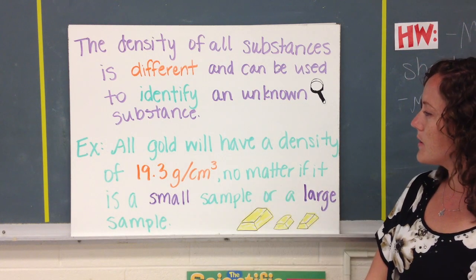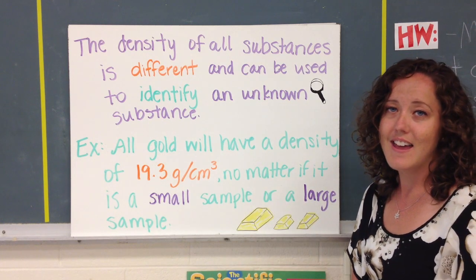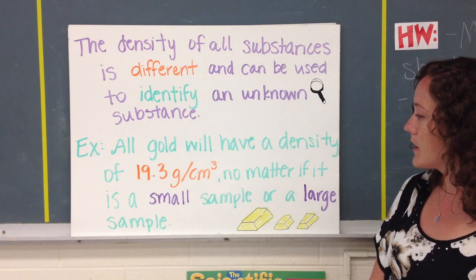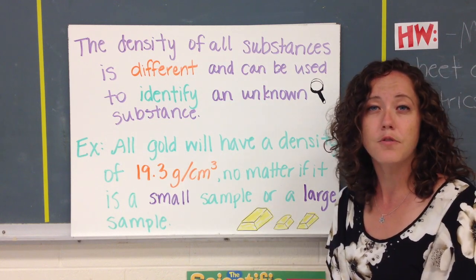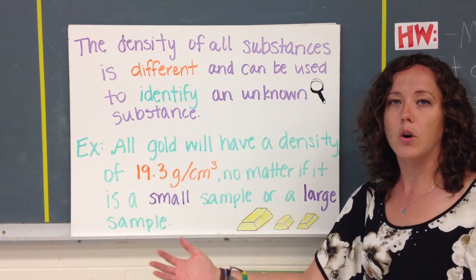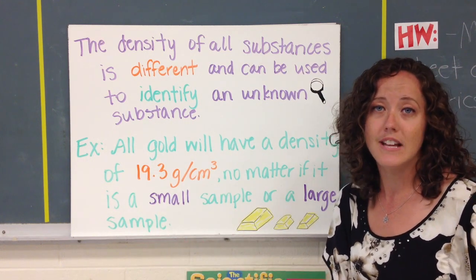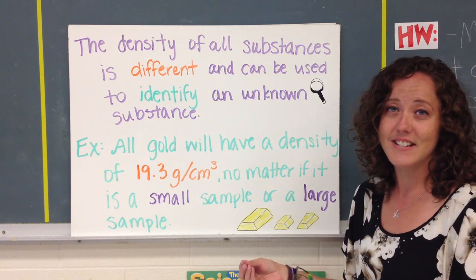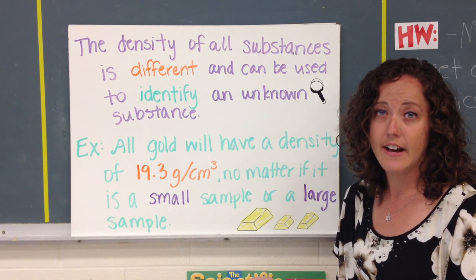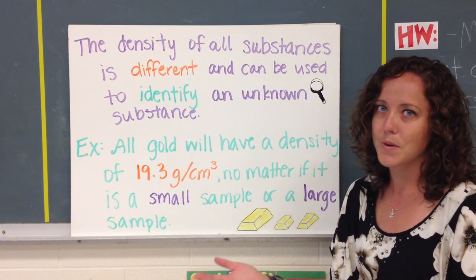Another example here says all gold is going to have a density of 19.3 grams per centimeters cubed. No matter what size the sample is, it could be a small sample, it could be like a gold fleck, it could be a giant block of gold. It doesn't matter. If it is gold, it has that same density. And if there's an object that does not have that density, it's not real gold. So this is how you can find out if you have true gold or fool's gold.